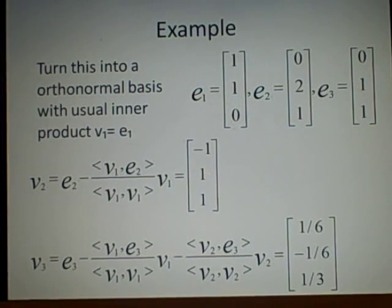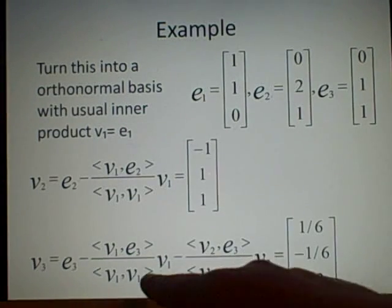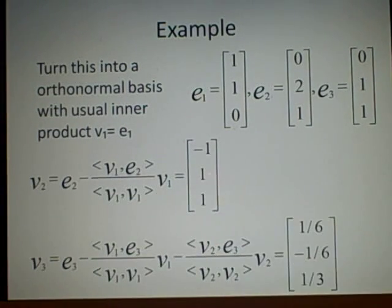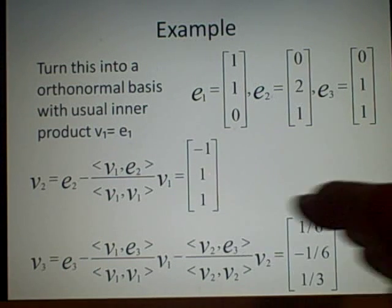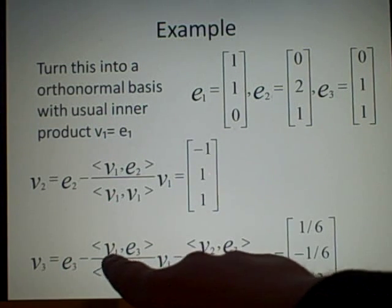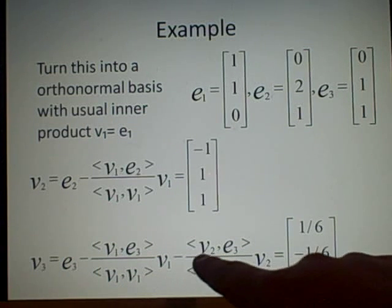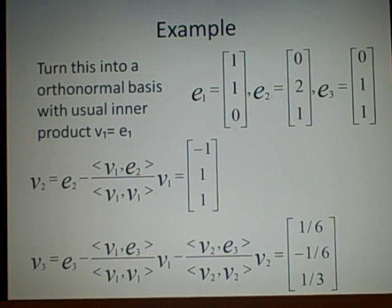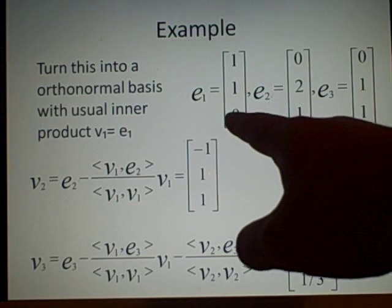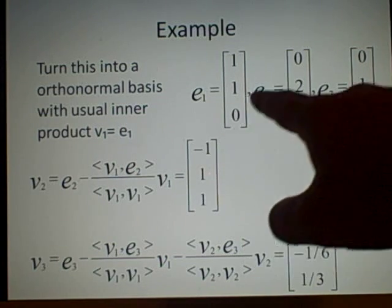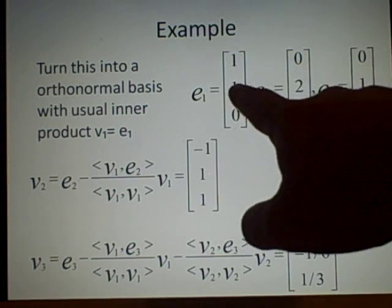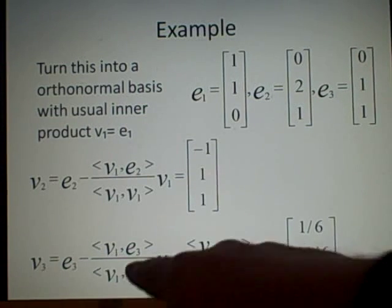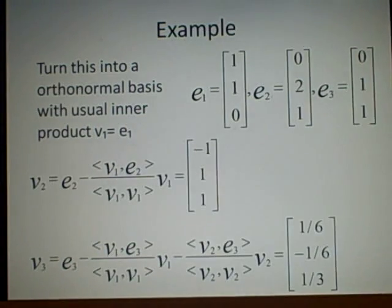Now, for V3, we do exactly the same again, but because we've gone up to 3, we now have the V1s and we have the V2s. Here, you can see how it follows on. So, we have V1, E3, V1, V1, V2, E3, V2, V2. Now, you can work this out exactly the same. So, we'll have V1 times E3. So, V1 is this one, times E3, which will give us 0, 1, it's just 1, over V1 dot V1, which we worked out here, which is 2.